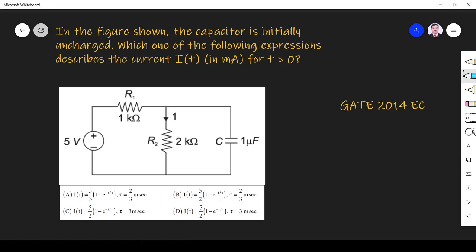Hi friends, in this video let us solve a circuit theory related question asked in GATE 2014 ECE paper. The question is, in the figure shown, the capacitor is initially uncharged. Which one of the following expressions describes the current I(t) in milliampere for t greater than 0?